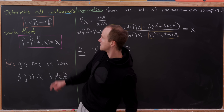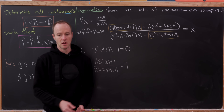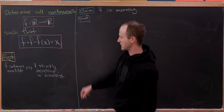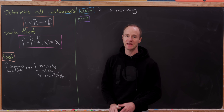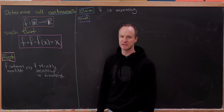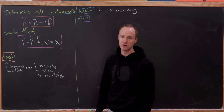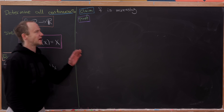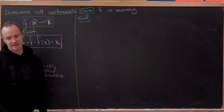Now let's move on to finding all of the continuous solutions to this equation. We'll move towards our main result with the following fact, which I won't prove: if F is continuous and invertible — meaning continuous and bijective — then it must be strictly increasing or decreasing. Let's start by showing that F must be increasing in this case.